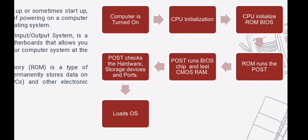Next is the POST. POST checks the BIOS chip first, then the CMOS RAM. If the POST does not detect a battery failure, it continues to utilize the CPU, inspecting the hardware devices such as the video card, secondary storage devices such as hard drives, ports, and other hardware devices such as the keyboard and mouse, to ensure they are operational. After POST has determined that all components are functioning properly and the CPU has successfully initialized, the BIOS looks for an operating system to load.